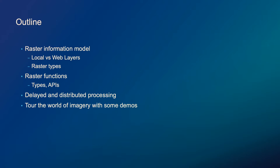We'll cover some basics and fundamentals about the raster information model, differences between local layer and web layer, what are raster types, and clarify some of the terminology. We'll get into raster functions in detail — that's what we'll be spending a lot of time on today. We'll touch upon distributed processing, delayed processing, some of the benefits of using imagery layers, and then it's going to be demo heavy, working with Jupyter Notebooks, Python API, and imagery layers.